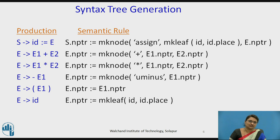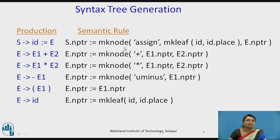What are the rules for syntax tree generation? The grammar rules are given here. If a production provides that start symbol S produces ID assigns to E, then it is implemented by the semantic rule where S.pointer equals make_node, calling a function make_node which creates the node. It creates an assign node where the left side is the leaf node and the right side is again a pointer. For ID it generates the leaf node and for E it writes the pointer.